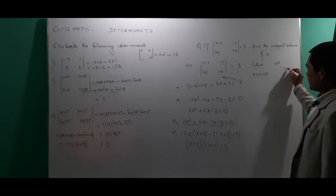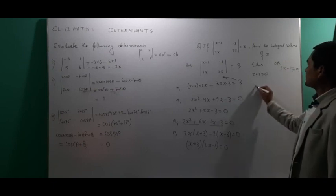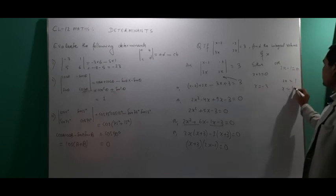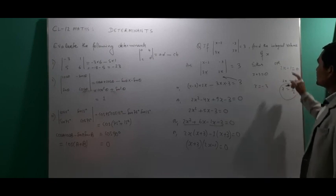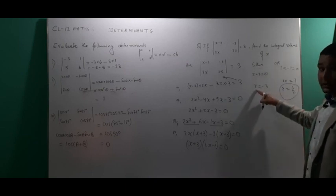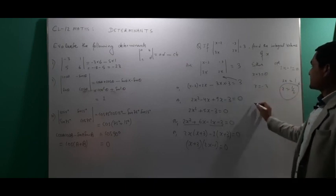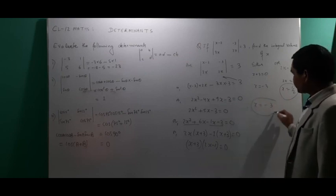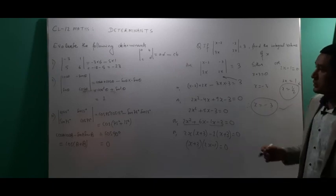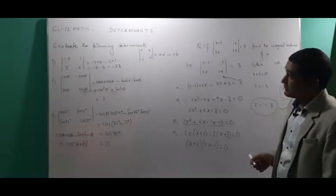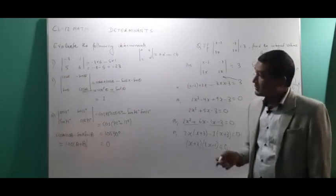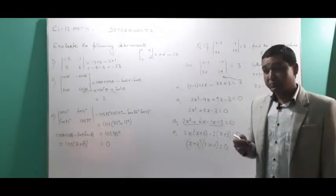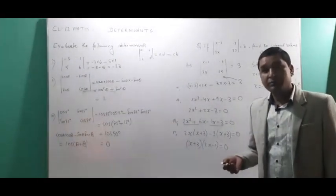Either x+3 equals 0, giving x equals -3, or 2x-1 equals 0, giving x equals 1/2. Since 1/2 is not an integer and we need the integral value, the correct value of x is -3. This is how we evaluate second-order determinants. These are simple examples. After going through this video, please try to solve other questions from your textbook.